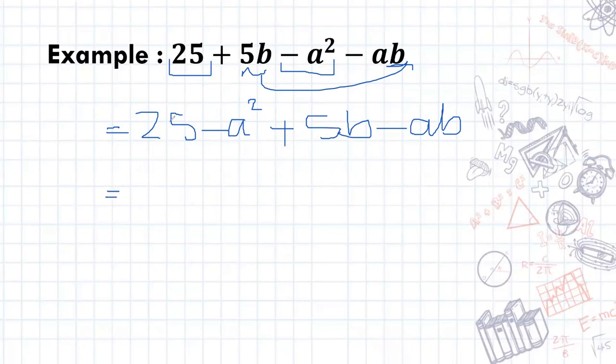Also I can see that this here is a difference of two squares. So I'm actually going to factorize it as a difference of squares. So we'll have 5 minus a and 5 plus a. And here we'll just take out a b. So I'll be left with 5 minus a.